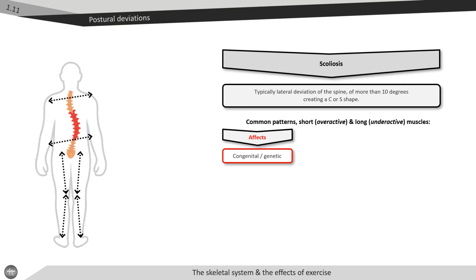Structural scoliosis is congenital or genetic, and the spinal deviations are within the bone structure itself. Structural scoliosis is not correctable through exercise and it may require surgical intervention for improvement.